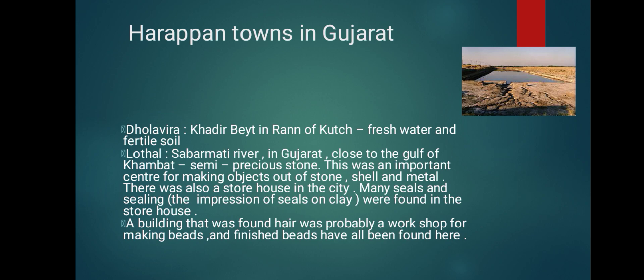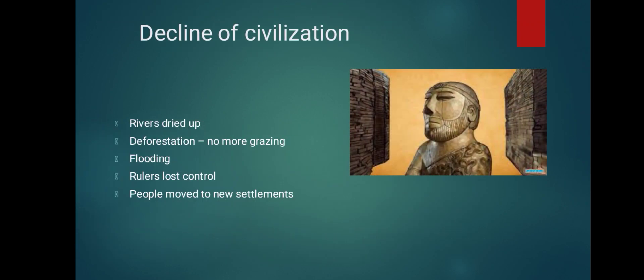Now we will talk about why and how the cities declined. Around 3,900 years ago, we find the beginning of major changes. People stopped living in many of the cities. Writing, seals, and weights were no longer used. Raw materials brought from long distances became very rare. Even in Mohenjo-daro, garbage piled up on the streets and less impressive houses were built.